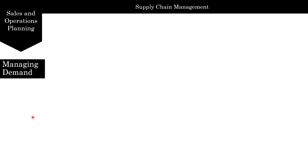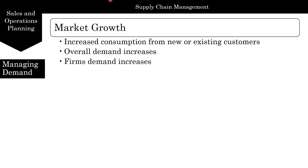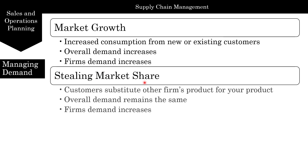Now let's focus on how we manage demand. Demand is connected to market growth — increased consumption from new or existing customers. We can attract new customers, which increases overall demand, and this is a win-win situation for everybody. The second approach is to increase market share by stealing market share. Customers substitute other firms' products for yours — overall demand remains the same but the firm's demand increases.